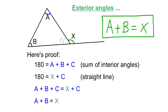Here's the proof. I know that A plus B plus C are the interior angles and add up to 180 degrees. I also know that angle C and angle X are on a straight line, so they add up to 180 degrees as well. Since both expressions equal 180, they equal each other: A plus B plus C equals X plus C. The C's cancel out, leaving A plus B equals X. That's the algebraic proof — the sum of the two interior angles equals the opposite exterior angle.